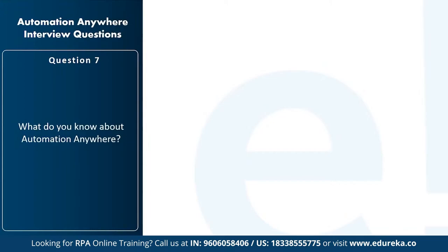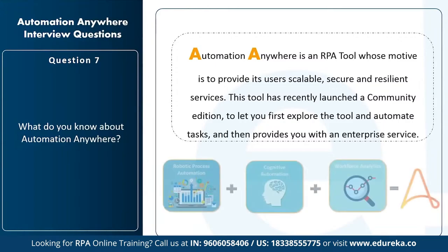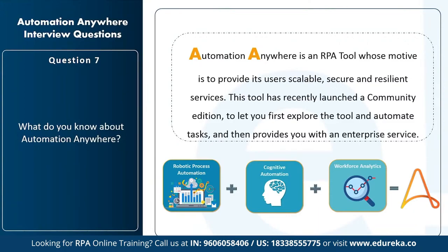The next question is: what do you know about Automation Anywhere? Automation Anywhere is an RPA tool whose motive is to provide scalable, secure, and resilient services. It has a community edition to explore the tool and an enterprise version for enterprise-level automation. It offers better performance with the ability to integrate with different platforms and scale simultaneously. You can summarize Automation Anywhere as: robotic process automation + cognitive automation + workforce analytics.